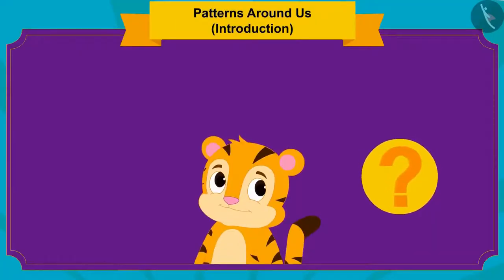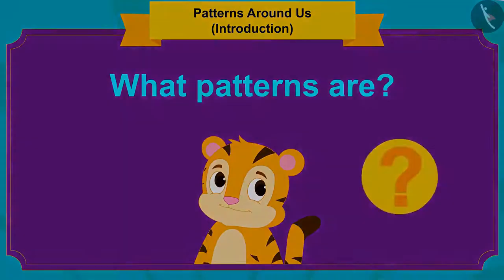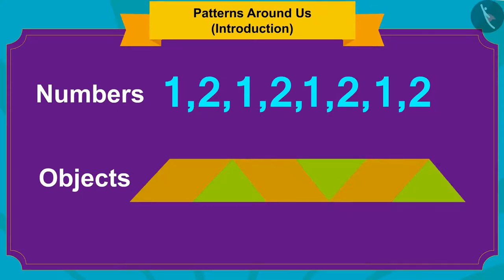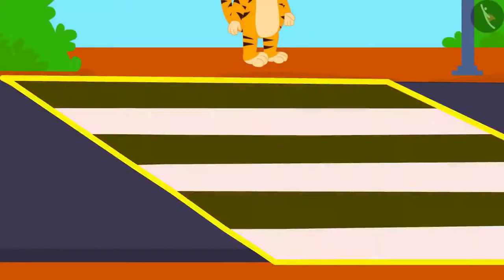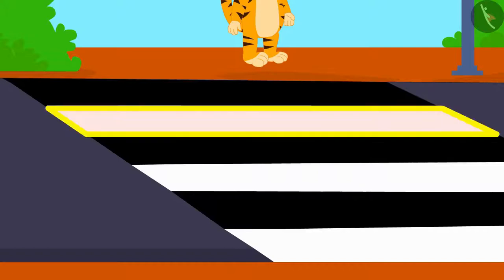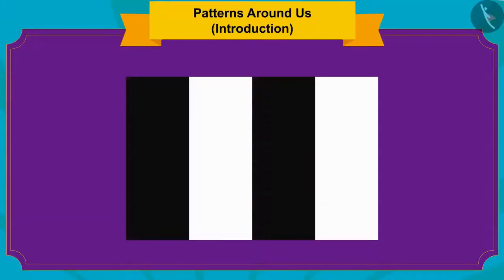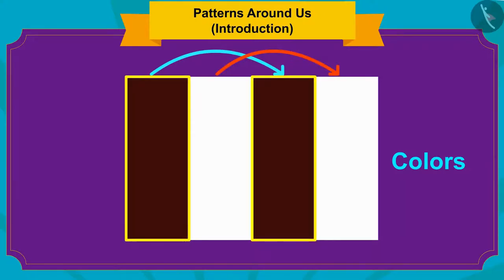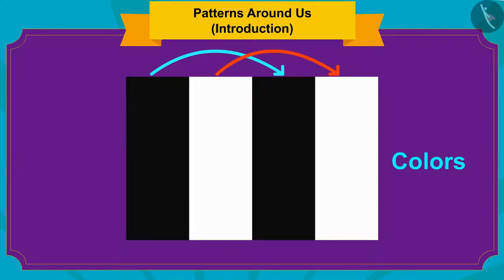Children, do you know what patterns are? A pattern is a group of numbers or objects arranged in such a way that all objects are related to each other by some rule. For example, here at the zebra crossing there is one black band and then one white band, and these are repeating to form the colors of the strips. This is an example of a pattern in which colors are being repeated according to a rule.